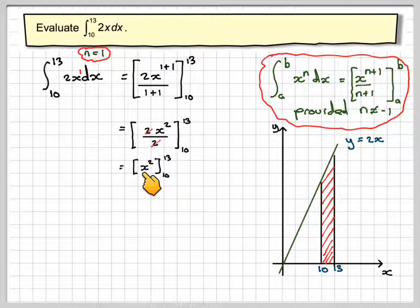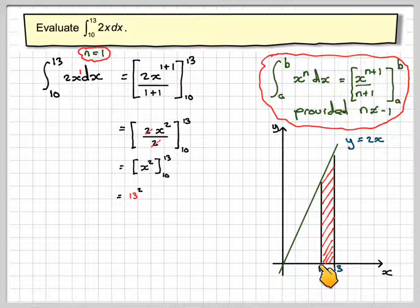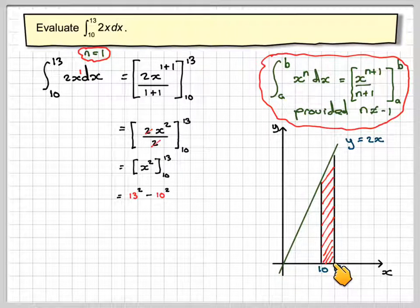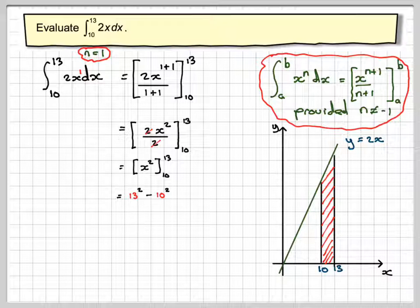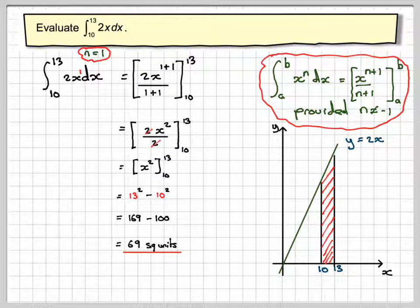Now what you do is you substitute 13 in here, and that gives the area from some arbitrary point up until 13. So it's going to be 13 squared, minus the area from 10 squared, which is the area from some arbitrary point up until 10. So subtracting the 2 will give me the area between the 2. 13 squared is 169, and 10 squared is 100. 169 minus 100 is 69 square units.